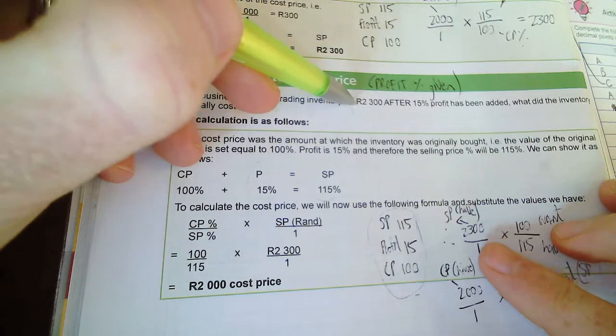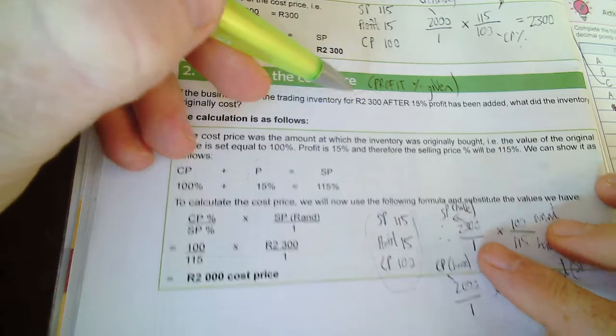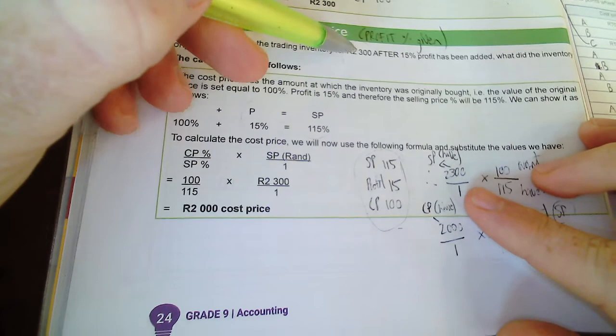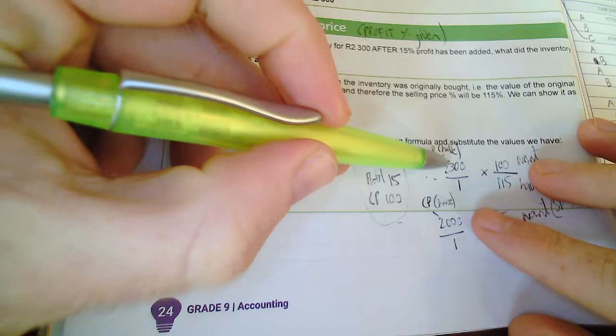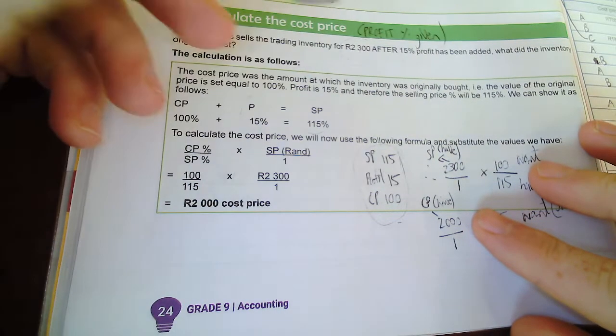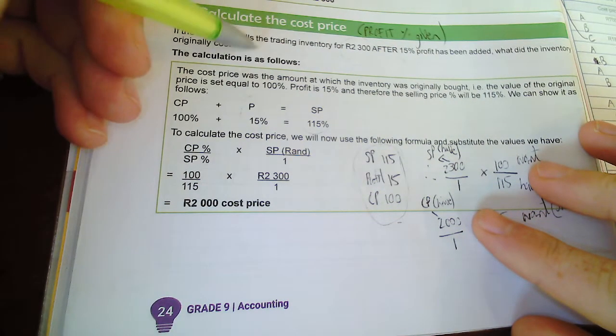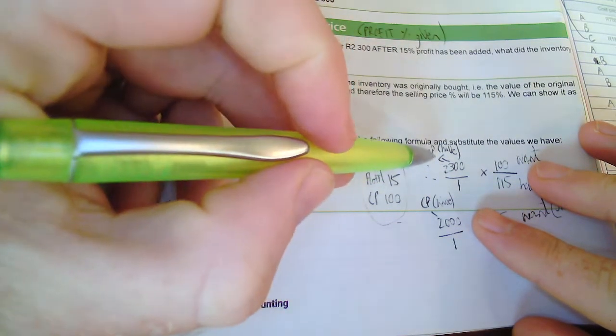Okay, so what do I have? They give me R2300, and I write it over one. What is this R2300? The selling price. I sell it for that, so the selling price is what I have.